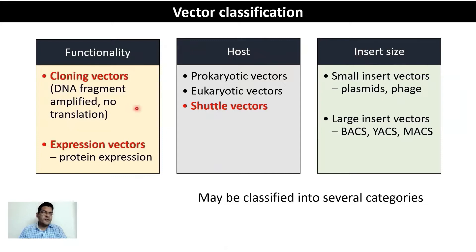In terms of functionality, you could have two types of vectors. A cloning vector is one where the DNA fragment is amplified but no translation happens. An expression vector allows not just amplification but also expression of the protein of interest.